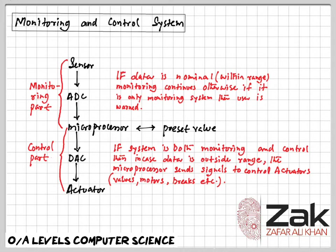ABS on cars uses magnetic field sensors to stop the wheels locking up if the brakes have been applied too sharply. When one of the car wheels rotates too slowly, it is locking up. A magnetic field sensor sends data to the microprocessor, which checks the rotation speed of the other three wheels.